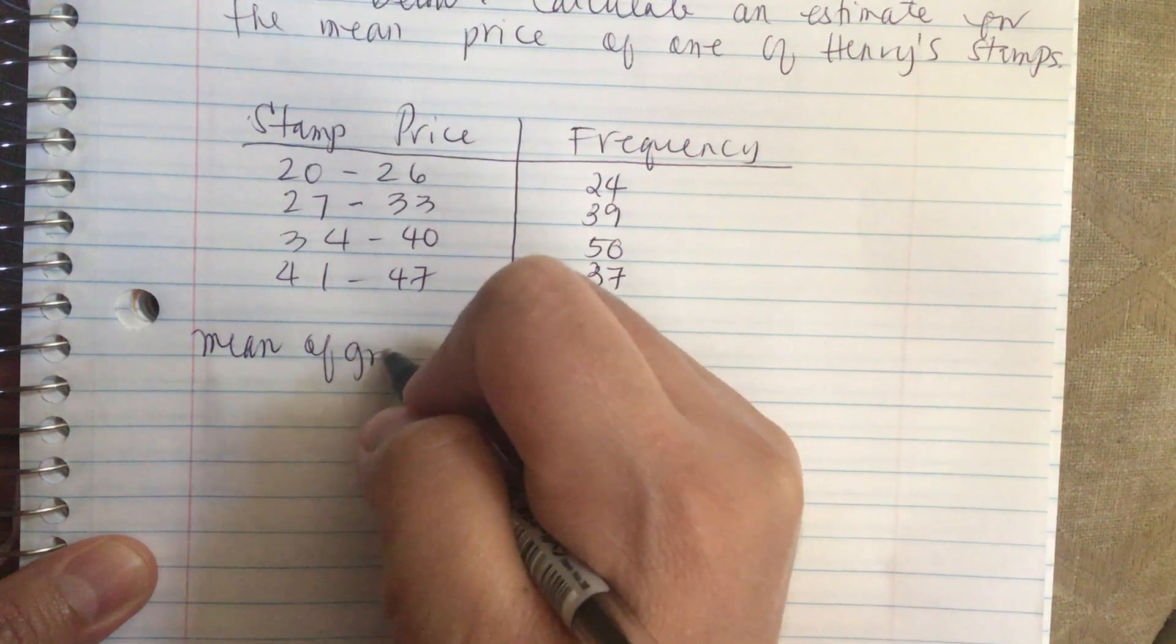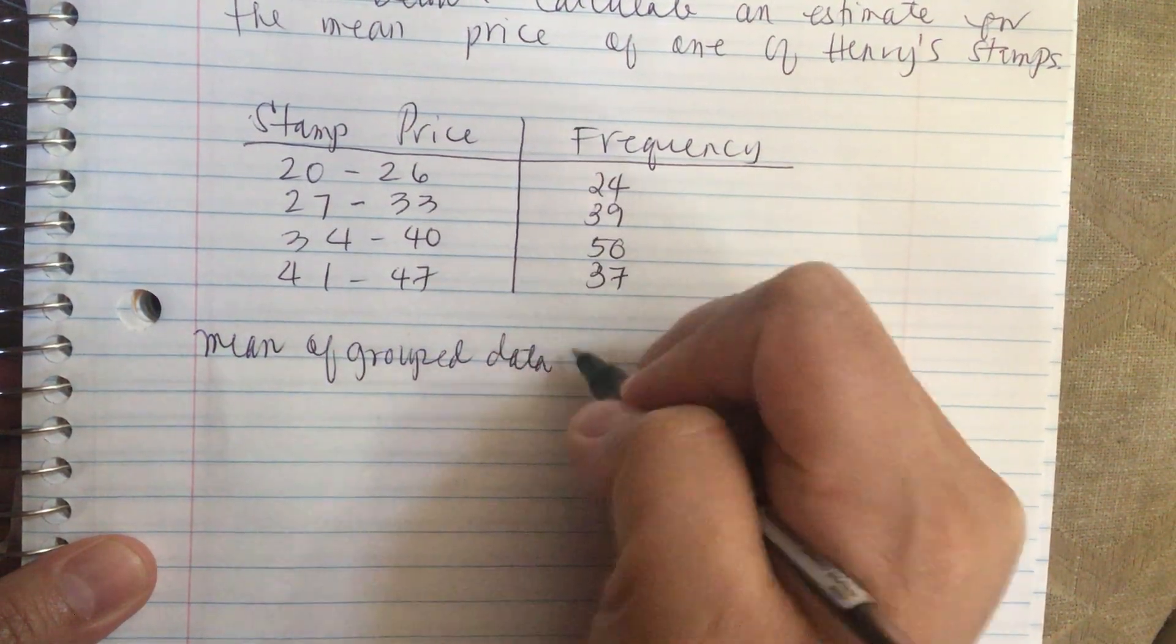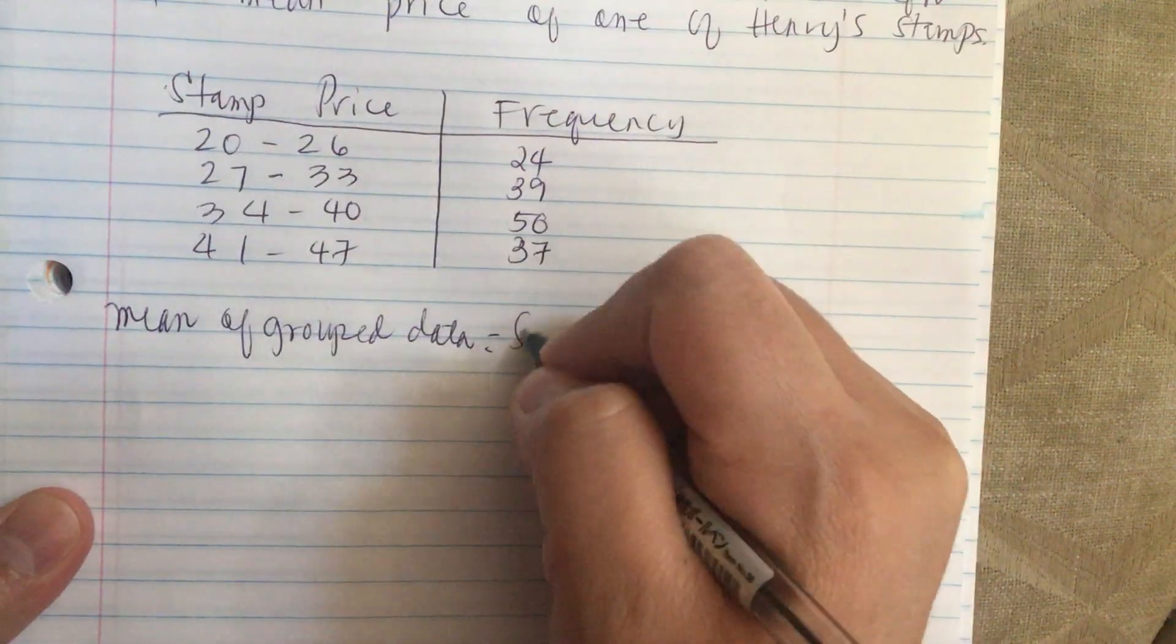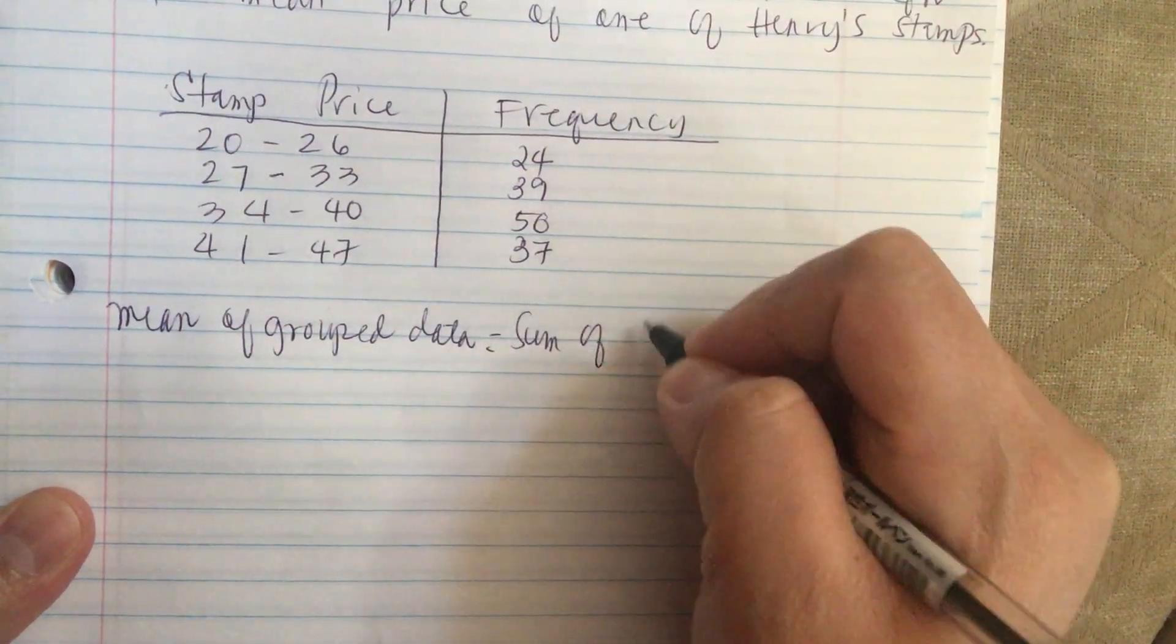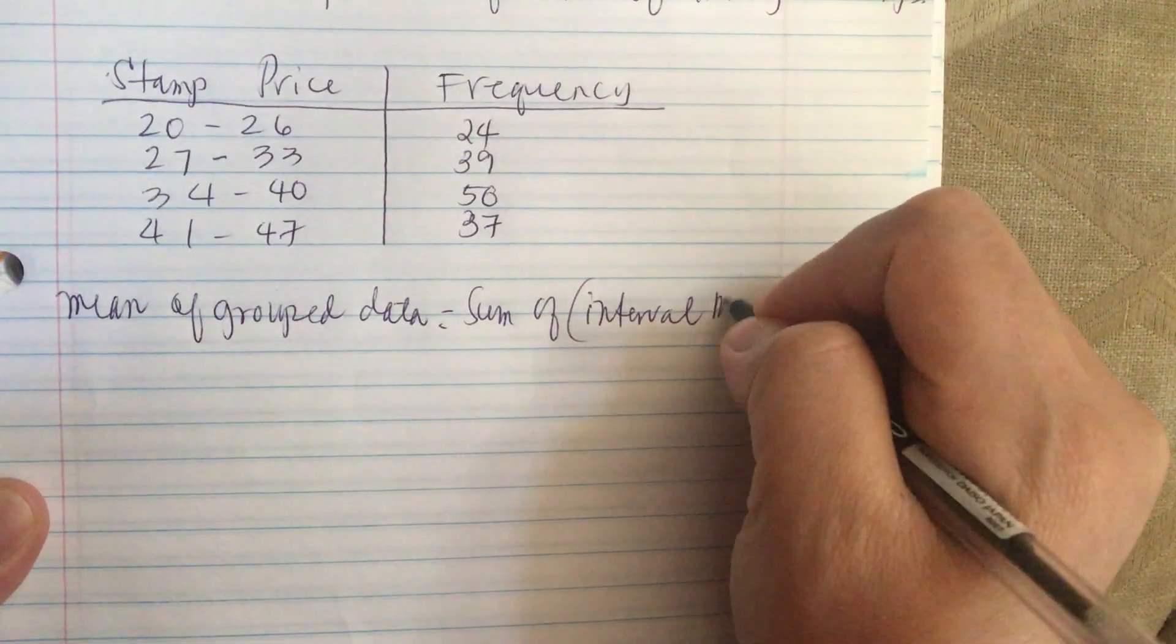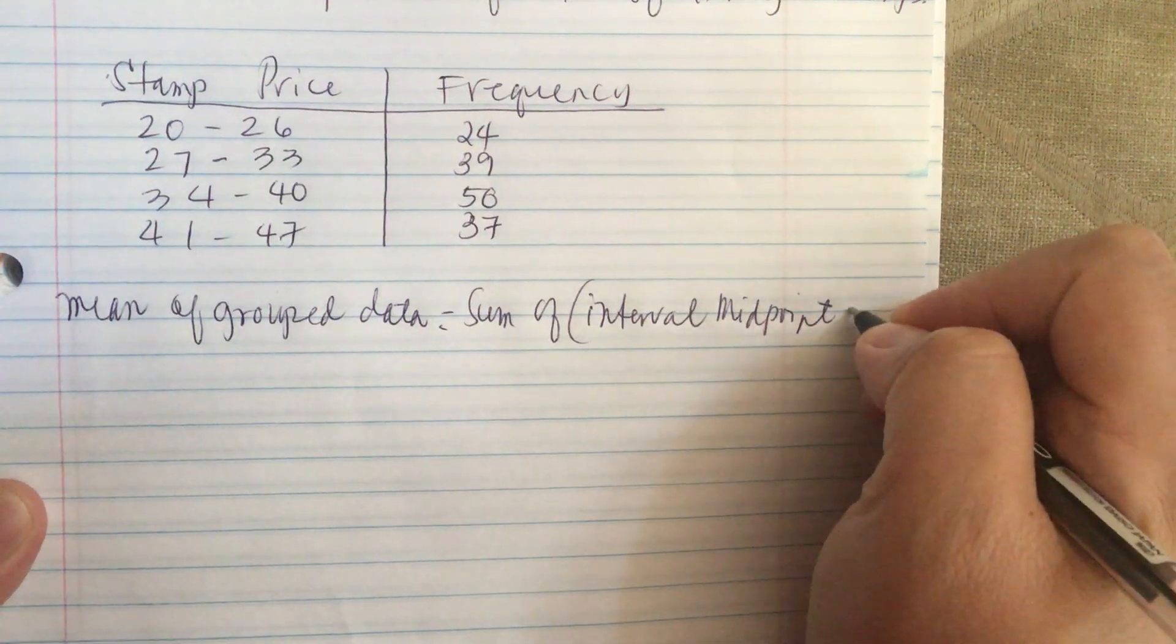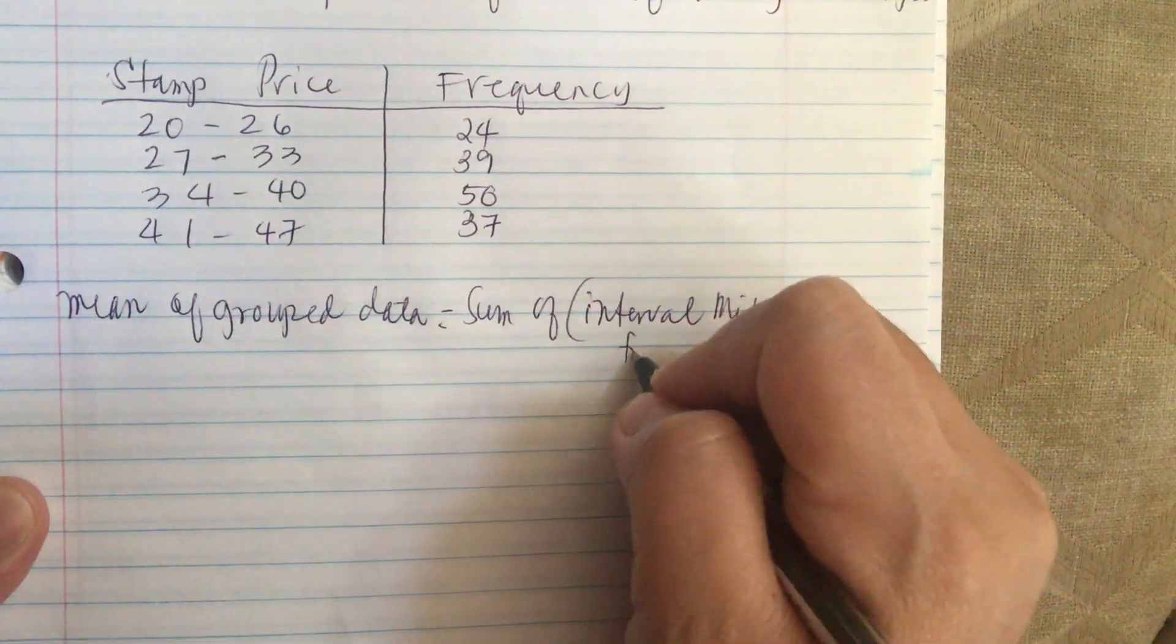The mean of grouped data is equal to the sum of the interval midpoint times the frequency.